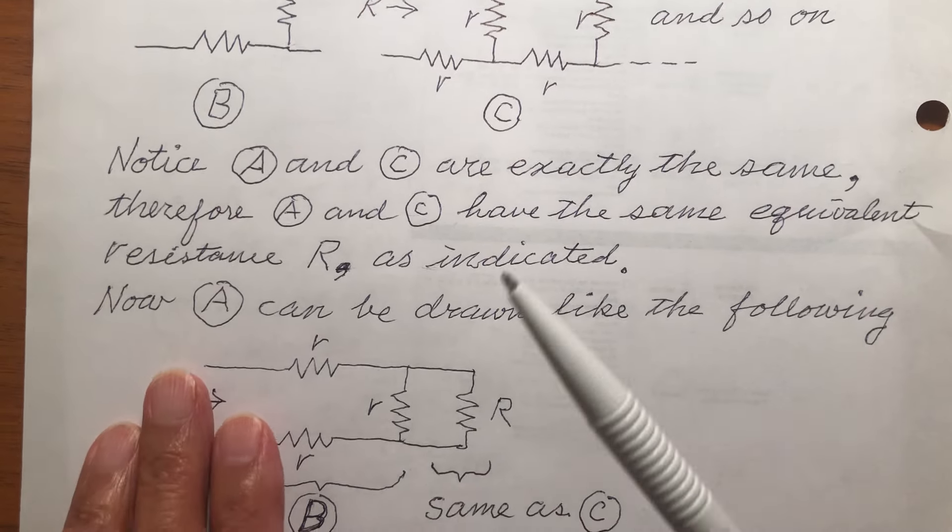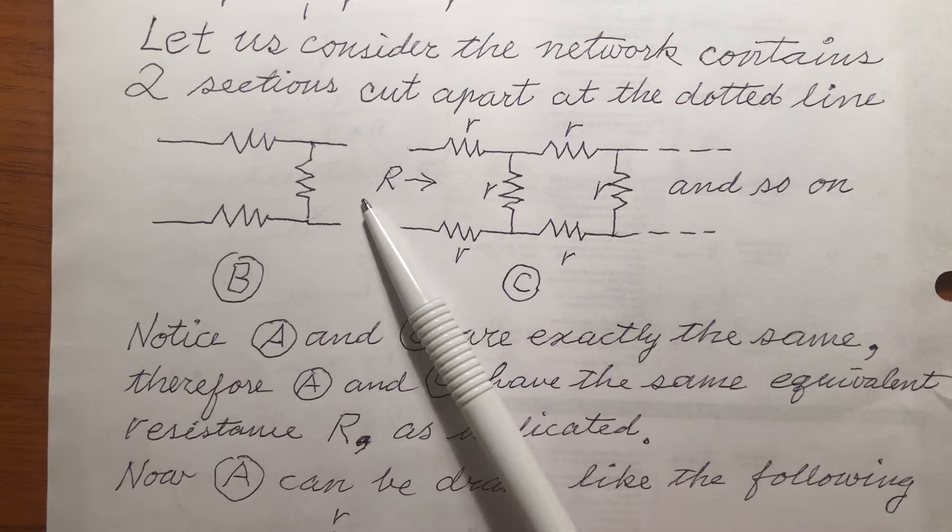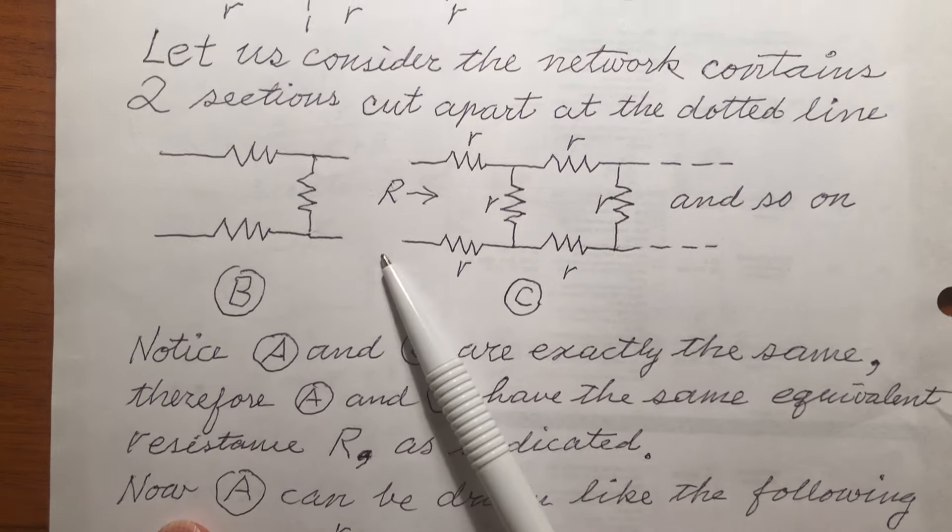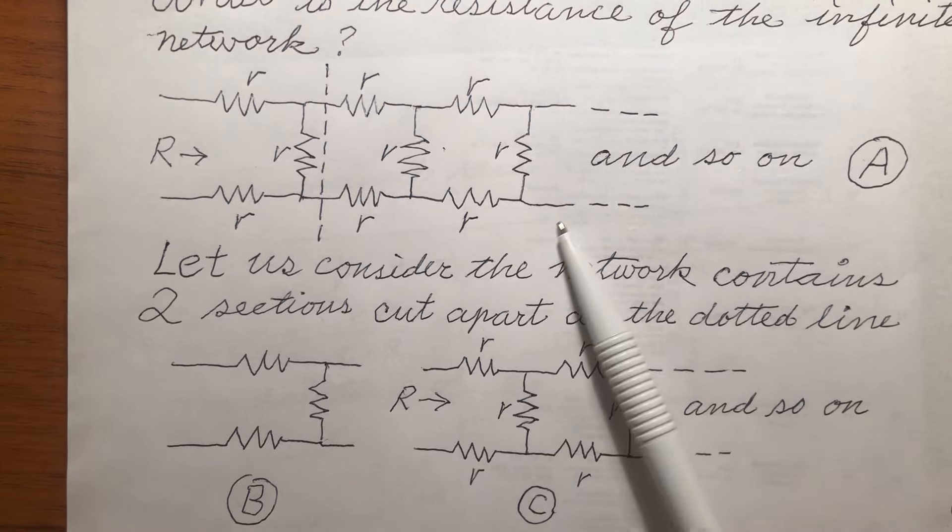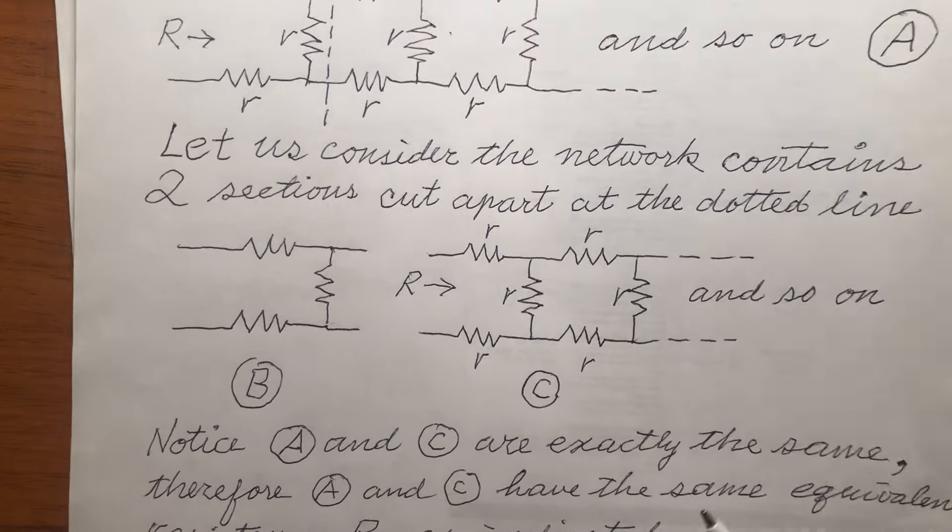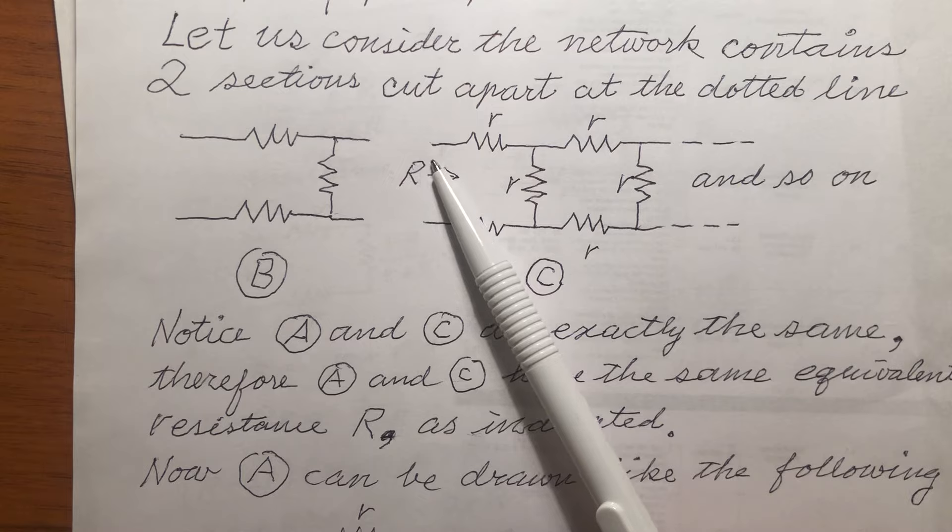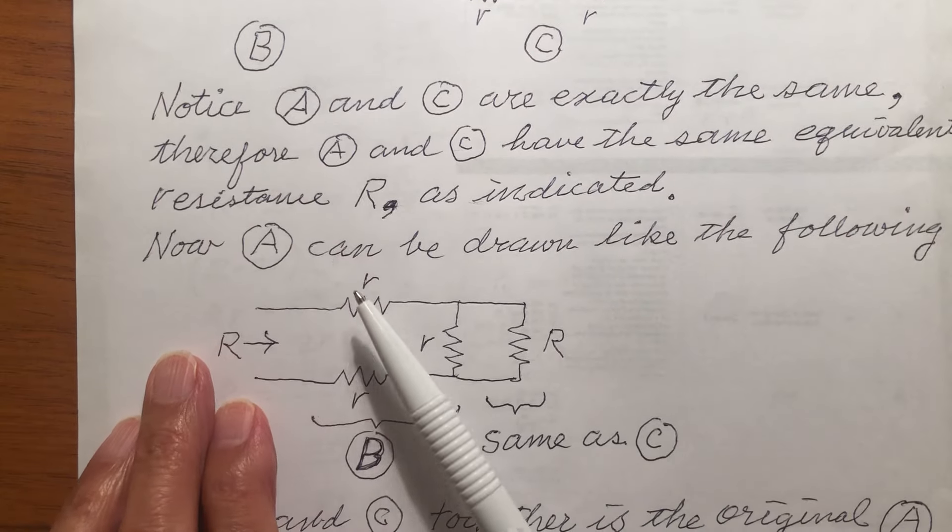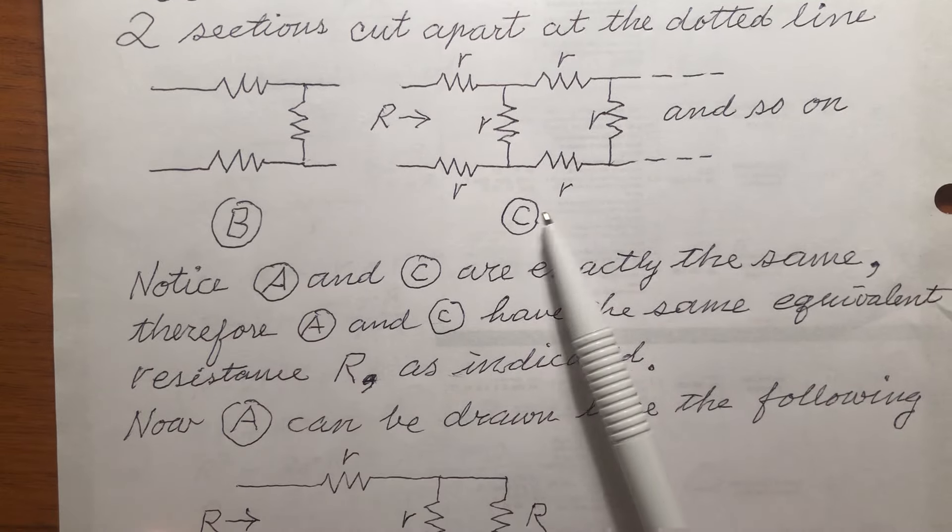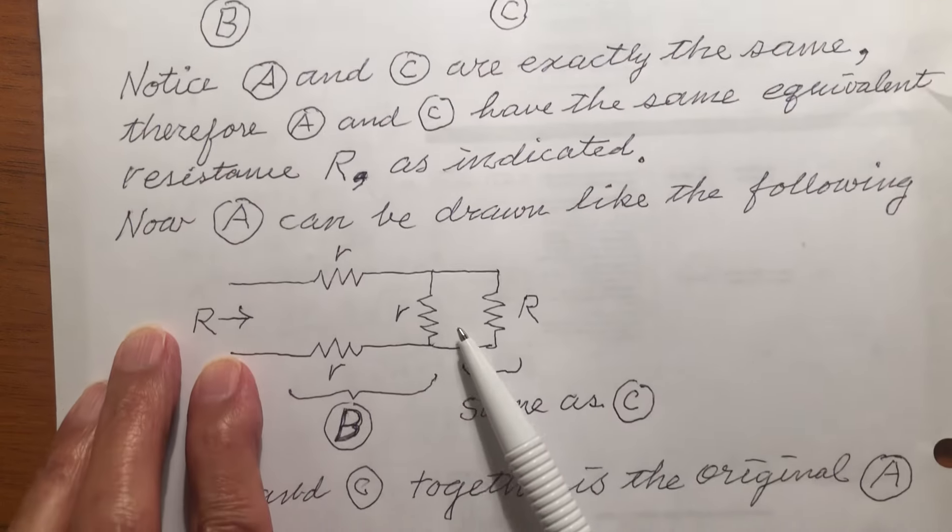Now, let's connect this to this section. Connect together. If you connect together, this is equivalent to the original circuit A. But then, because this is equivalent resistance R, when you connect section B and section C together, section C is essentially capital R.